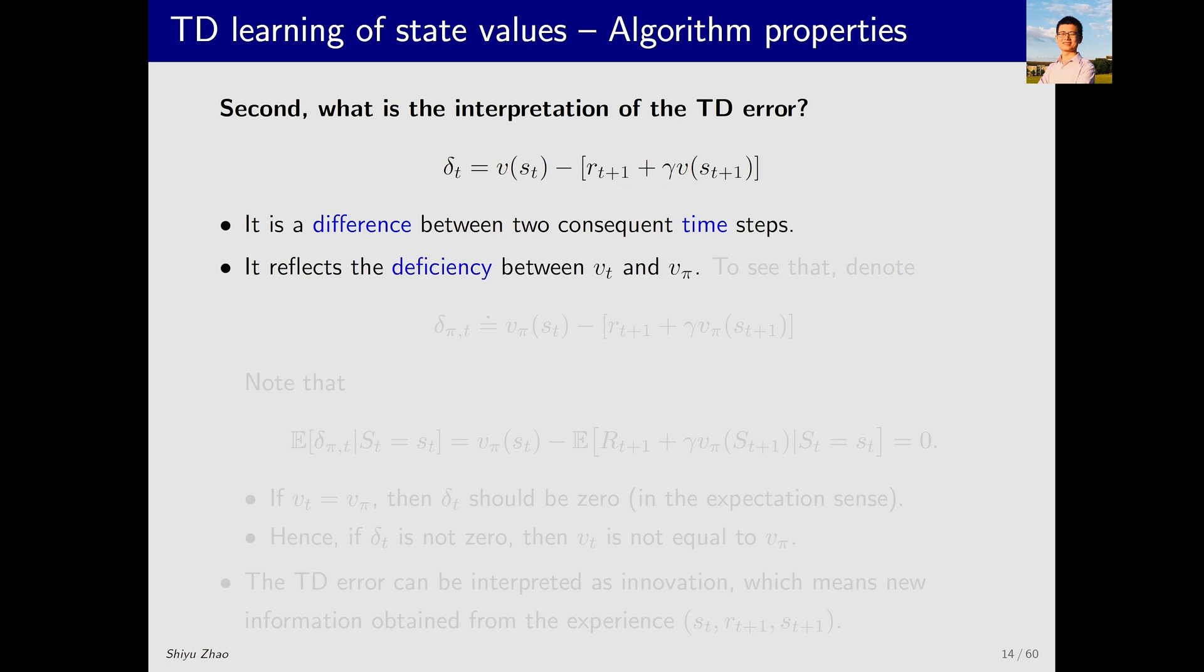Moreover, the TD error not only describes the error between two time steps but also describes the error between V_t and V_pi. V_pi is the value we want to estimate and V_t is our current estimate. This delta_t can describe the difference between these two values. Why? First, let me summarize in one sentence. When V_t equals V_pi, delta_t should be zero. Conversely, if delta_t is not zero, it indicates that V_t does not equal V_pi. This is the conclusion.